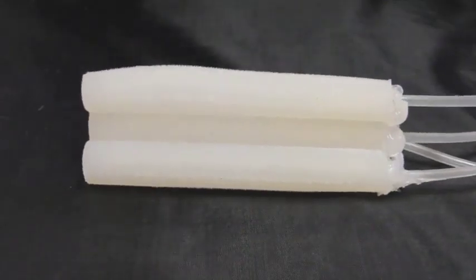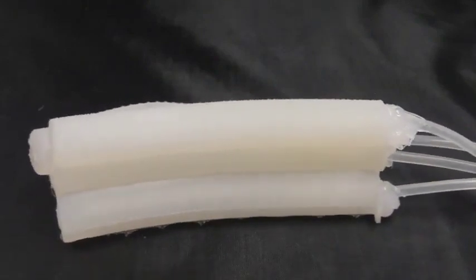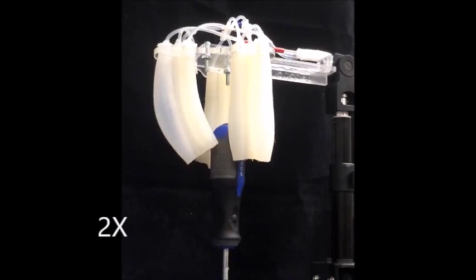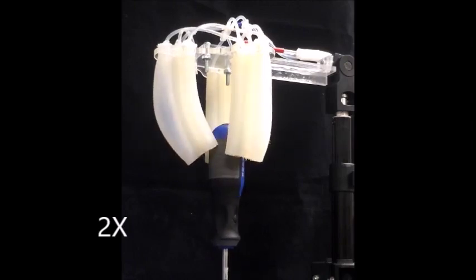We fabricate the actuator modules using a silicon elastomer material. The actuator modules consist of three pneumatic chambers which can be inflated independently to achieve a range of complex motions.